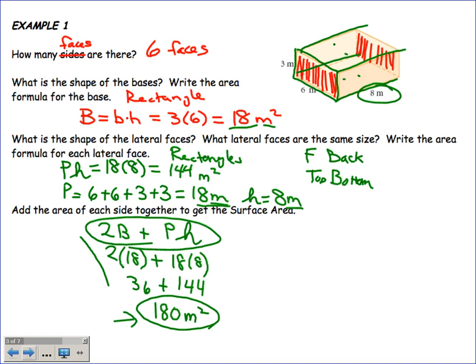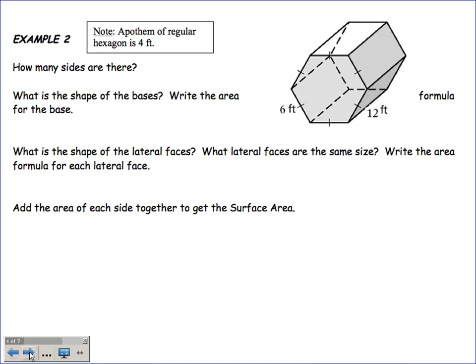The best process is: find the area of the base, find the perimeter of the base, find the height between the bases. Now here's a hexagonal prism. The apothem of the regular hexagon is four feet. Let me ask what the perimeter of the base is going to be, and what the height is going to be.